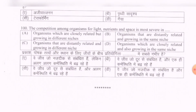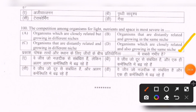Last question: The competition among organisms for light, nutrients, and space is most severe in — options are: organisms which are closely related but growing in different niches; organisms that are distantly related and growing in the same niche; organisms that are distantly related and growing in different niches; organisms which are closely related and growing in the same niche. The correct option is D — organisms which are closely related and growing in the same niche. Thank you.